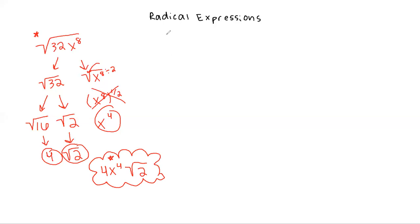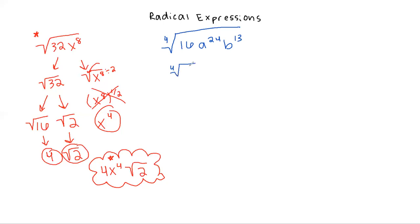Now let's make it a little bit harder, where we're going to have a different root. We're going to have the fourth root of 16, a to the 24th, b to the 13th. Just like before, we can split this up into all of its individual components. At some point you don't need to necessarily write this down — you can just work your way down the line — but until we get more comfortable, we can just think of it as completely separate components.